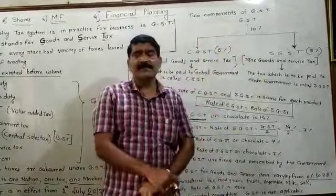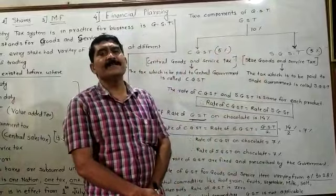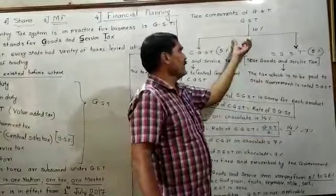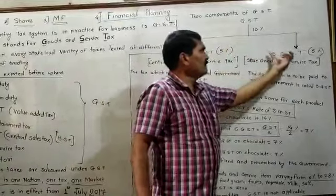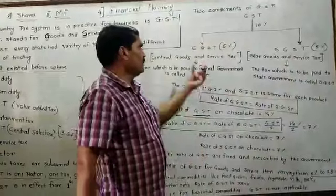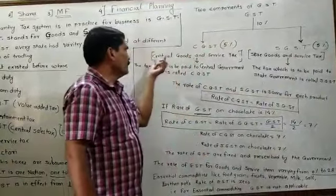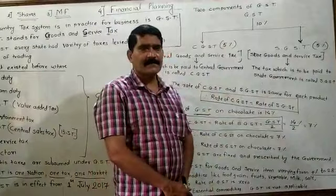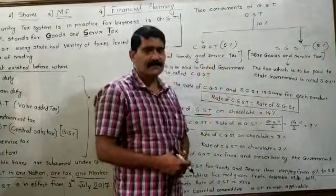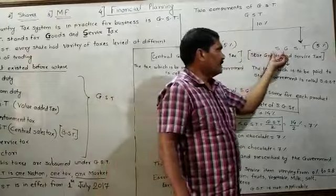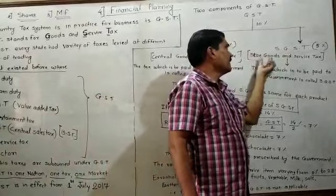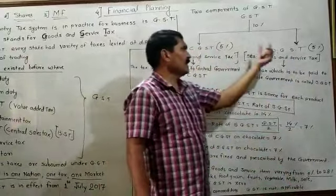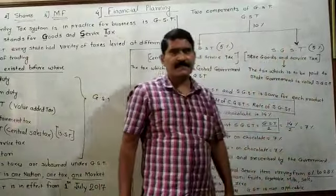Now we need to learn the two components of GST. The GST is divided into two parts: one is CGST and another one is SGST. CGST stands for Central Goods and Service Tax, where C means Central. SGST stands for State Goods and Service Tax.